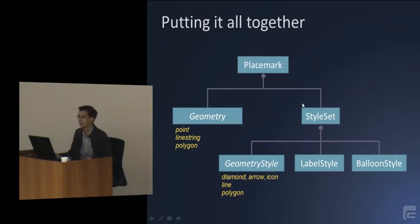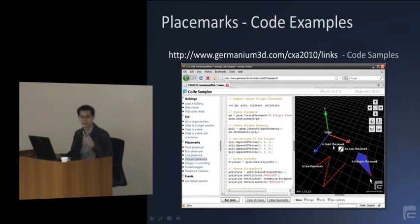You have a placemark, you have a geometry, which can be one of these types, you can choose one of the geometry styles, and they match up to the geometry. Optionally, you can specify a label and a balloon style. And this is why there's a style set, so that you can lump all them together and move them around. So let's go take a look at what it looks like programmatically, makes things much clearer.